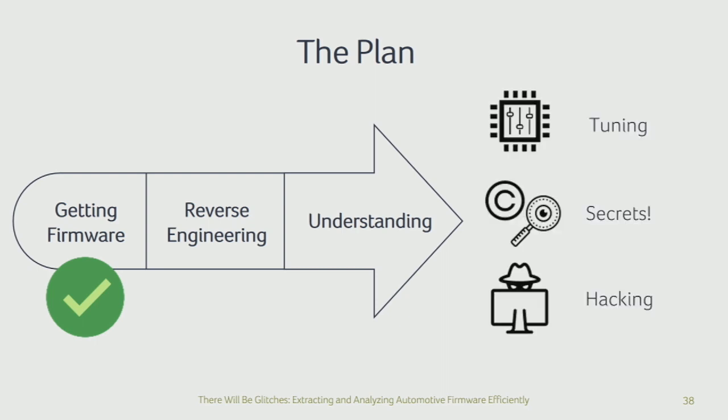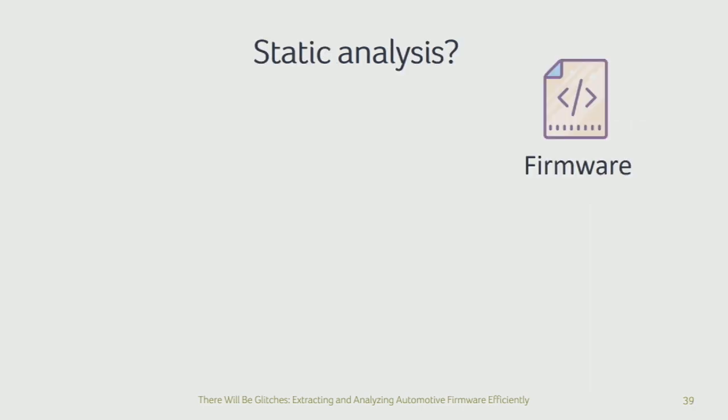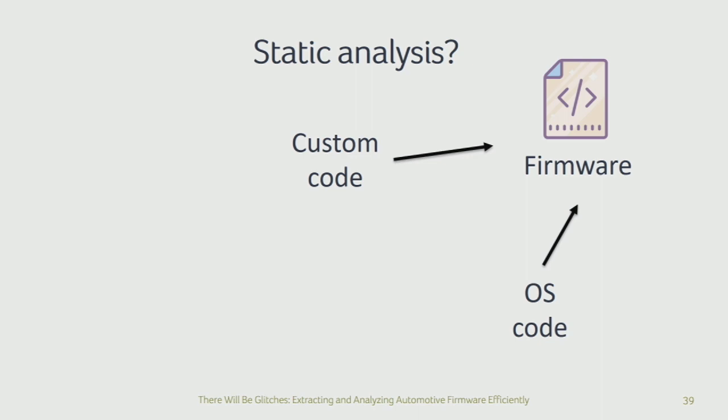It should be easy, right? We have this firmware blob, we could do some static analysis and everything will be clear. The typical way this works is you have some OS code — maybe Linux, VxWorks, QNX — and some ECU-specific code, and you simply reverse engineer the application. But in the automotive world, for many ECUs, this is not how it works. What actually happens is you get a blob with a huge amount of generated code: some kind of configuration that might differ per market, per car brand, per model, plus models defined at a high level using something like Simulink — all generating code that goes into your firmware blob.